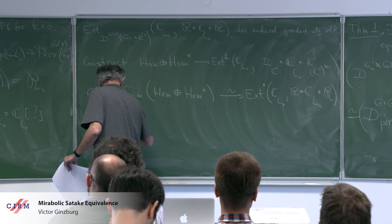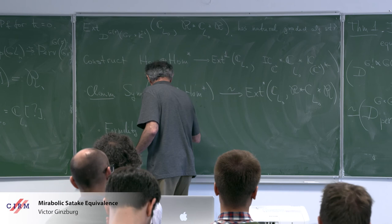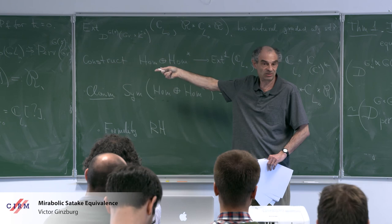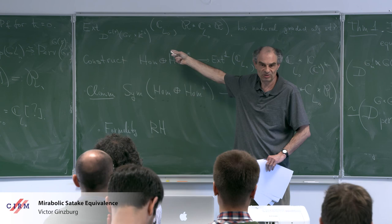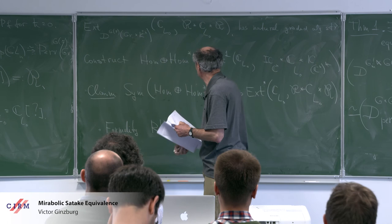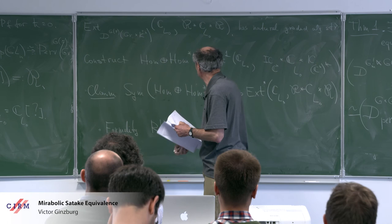The final step is formality: the DG algebra R Hom is in fact formal and isomorphic to the symmetric algebra. This object is a progenerator, and that completes the proof.